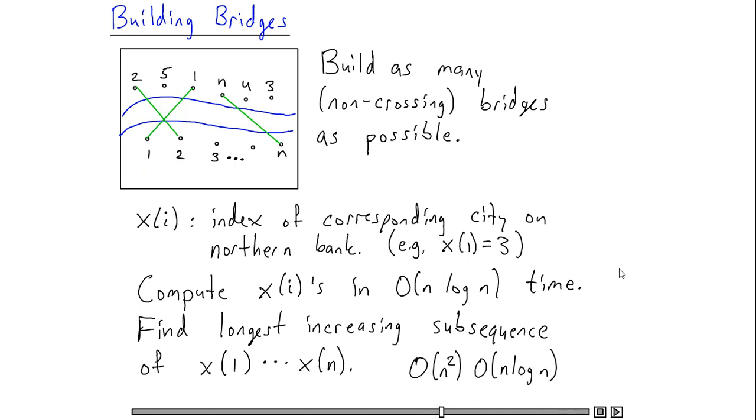Why does this give me an optimal solution to the building bridges problem? Well, let's look at any feasible solution to the problem. A feasible solution will consist of a subset of the cities on the southern bank which are connected via bridges to their corresponding cities on the northern bank.